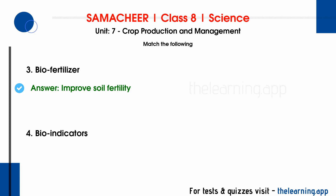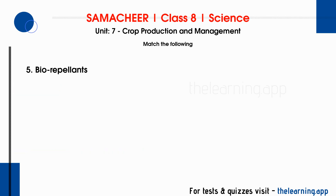Fourth: bioindicators — correct answer is quality of environment. Fifth: biorepellent — correct answer is neem leaves. Neem leaves act as a biorepellent.